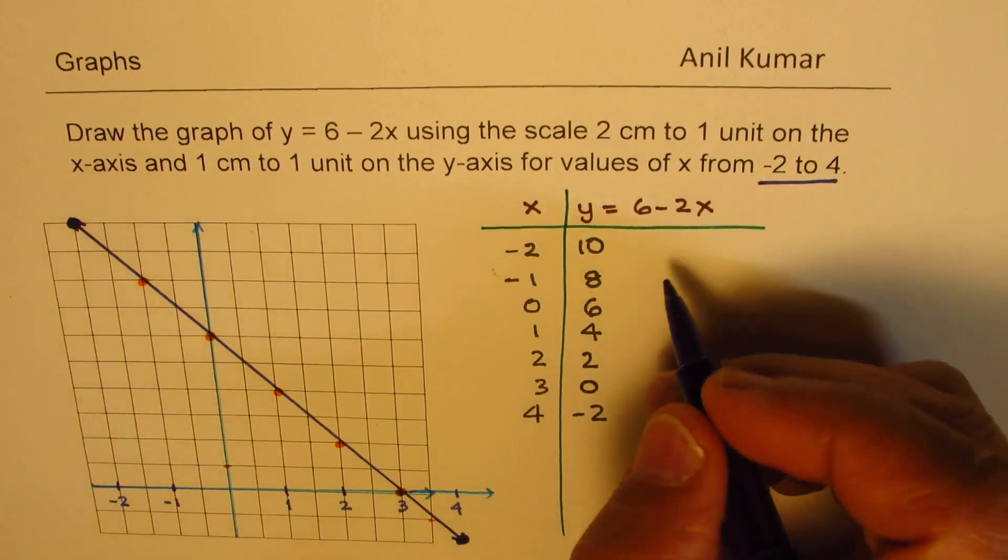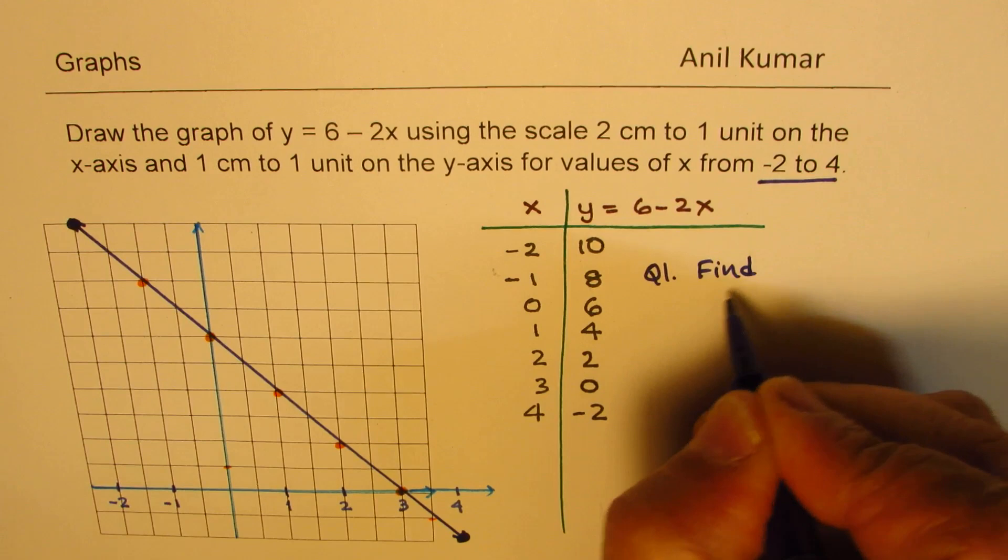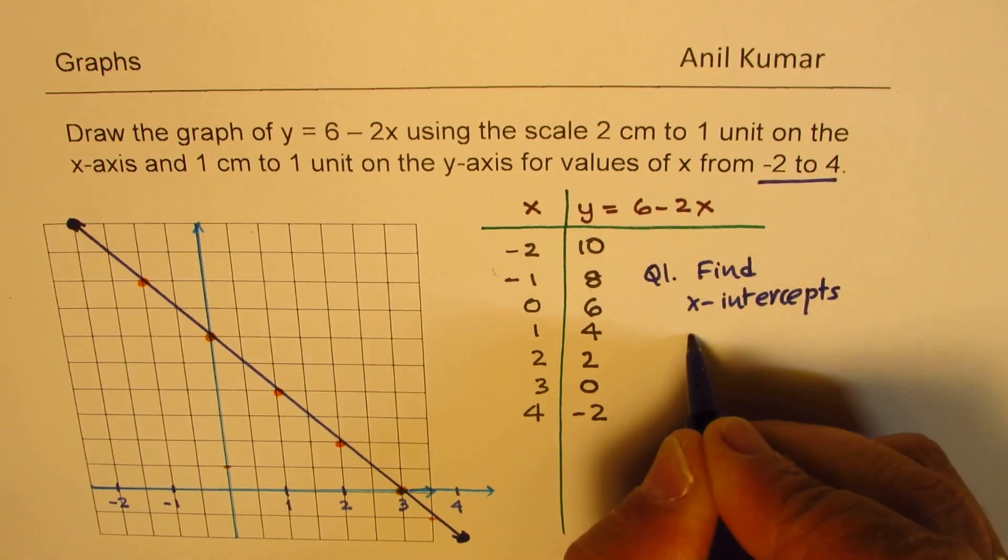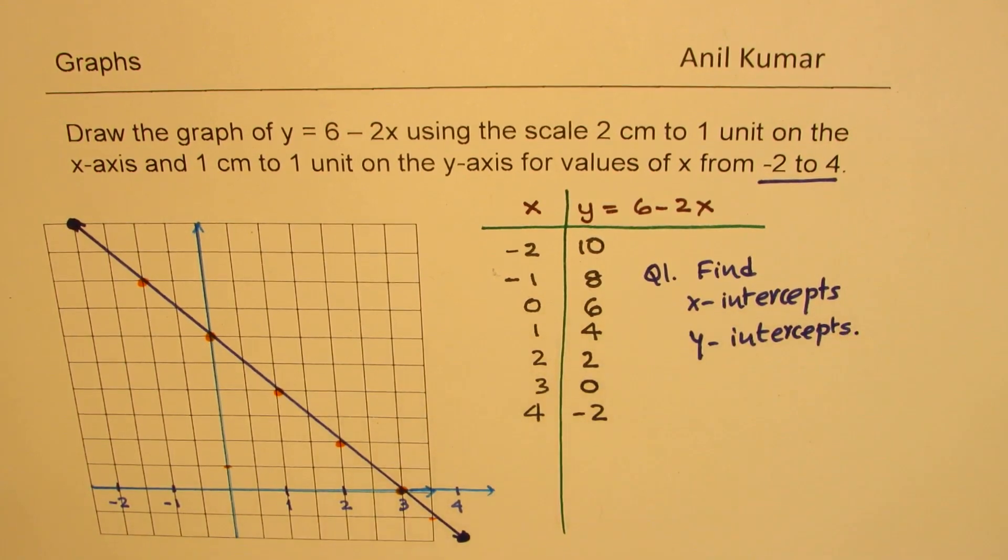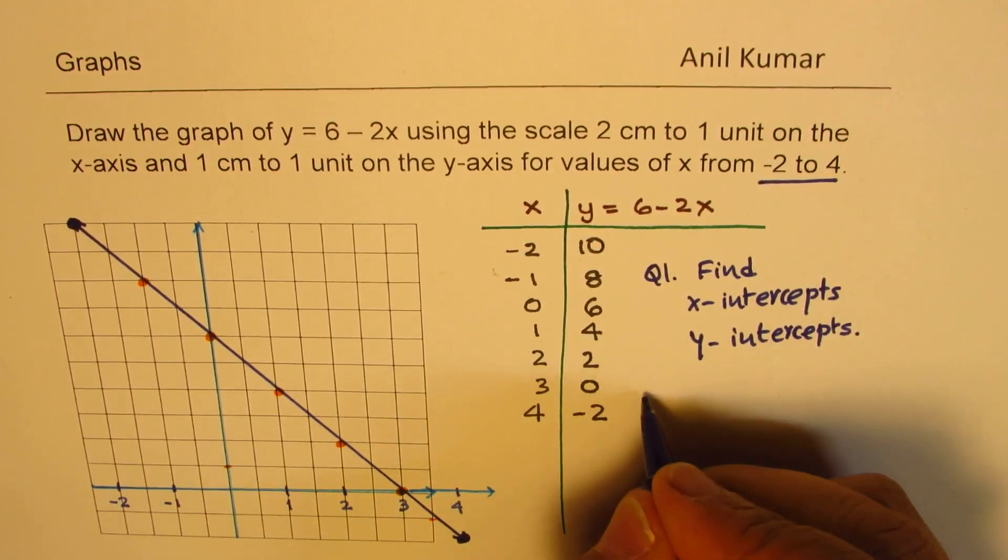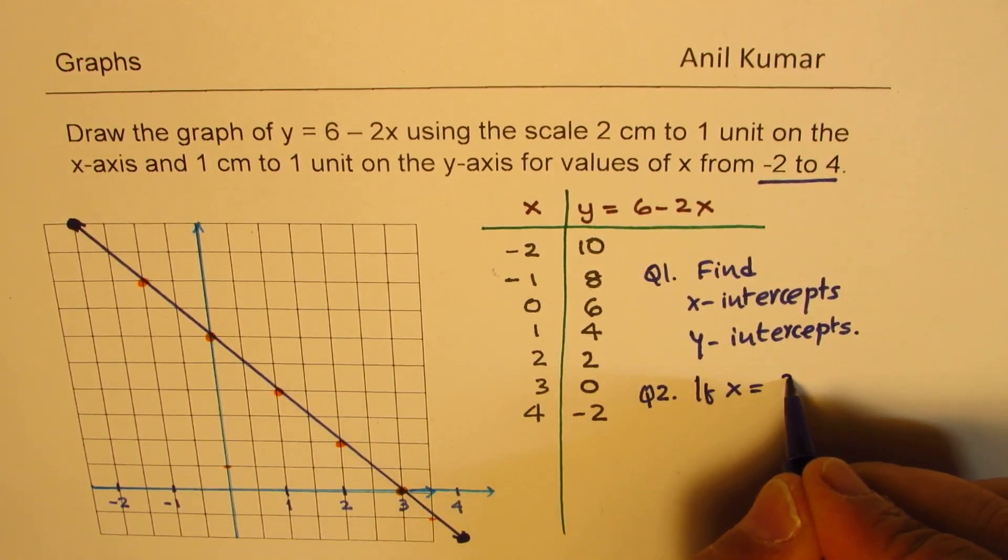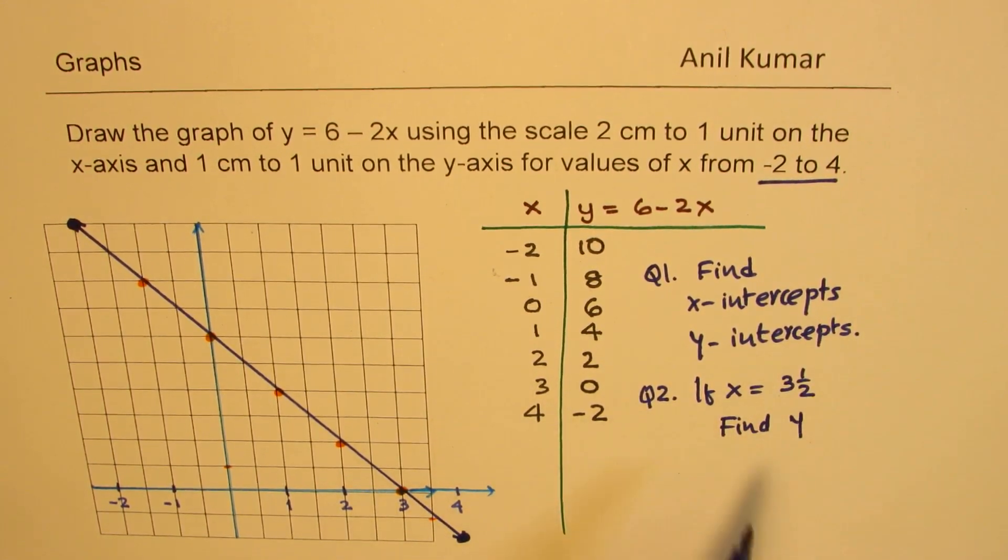Now, you could have related questions from here. Questions like question 1, find intercepts. So we can say find x-intercepts and find y-intercepts. We can also have a question, which is, from the graph, if x equals to 3 and a half, find y. So you could interpolate and get the value of y. So you can actually solve these two questions using the graph as an added exercise.